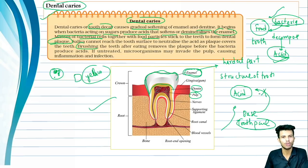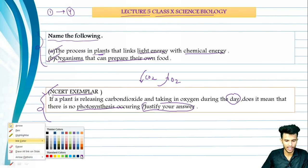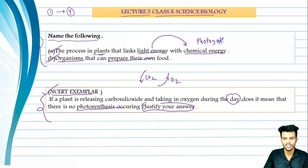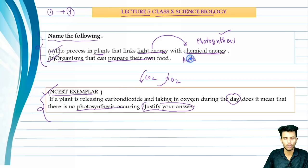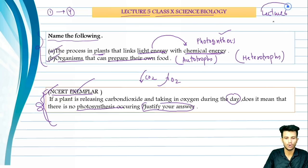Now let's answer the review questions from the beginning of the lecture. First question: which process converts light energy to chemical energy in plants? The answer is photosynthesis. Second question: which organisms prepare their own food? The answer is autotrophs. Organisms that cannot do this are called heterotrophs. The NCERT example question will be discussed in lecture 6 — please put your answer in the comment section.